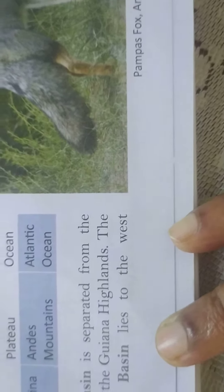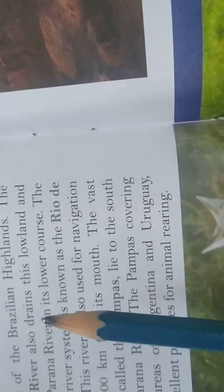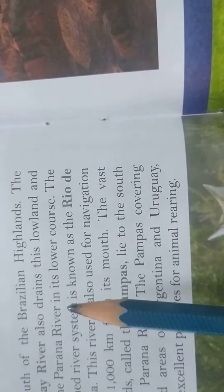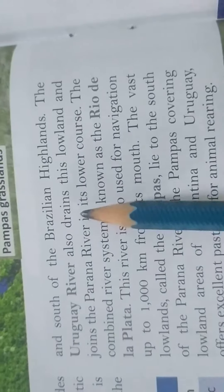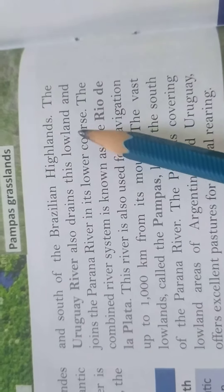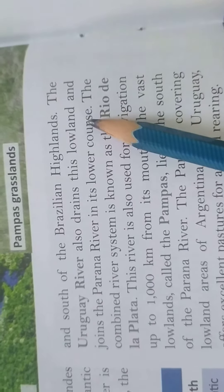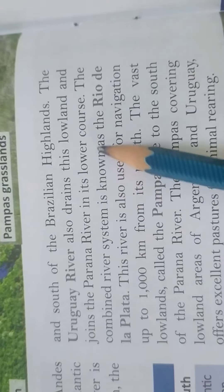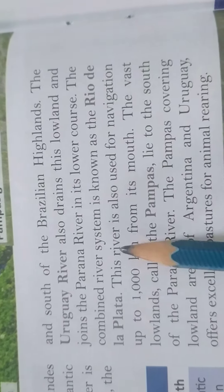The Paranaparaguay Basin lies into the West and South of Brazilian Highlands. Yeh jo Paranaparaguay Basin, yeh West and South of Brazilian Highlands se jura hua hai. The Uruguay River also drains this Lowlands and joins the Paranaparaguay River. Uruguay River jo hai, yeh Central Lowland pe drains hua hai, ar Paranaparaguay River se jura hua hai lower force mein.